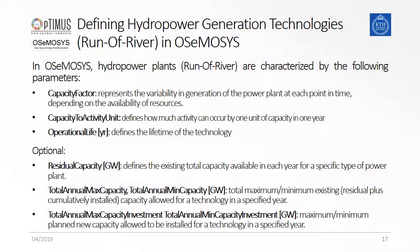The capacity to activity unit defines how much activity can occur by one unit of capacity in one year. In our model, we are using gigawatt for capacity and petajoule for energy. Thus, one gigawatt can provide 31.536 petajoule annually, which means that we set the capacity to activity unit to 31.536 as for every other power generating unit in our model. The operational life is used to indicate how long a technology is usable after installing it — this means we are indicating the technical lifetime.